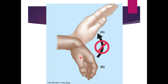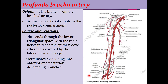This diagram shows wrist drop. Now we will discuss the artery supplying the posterior compartment of arm — the profunda brachii artery. It is the first branch of the brachial artery and the main arterial supply to the posterior compartment of arm. It descends through the lower triangular space with the radial nerve, passes along the spiral groove covered by the lateral head of triceps, and terminates by dividing into anterior and posterior descending branches.